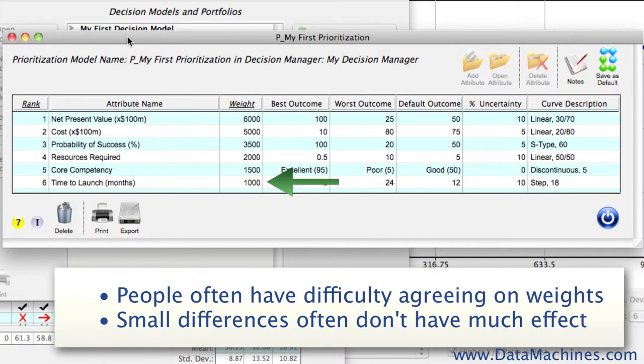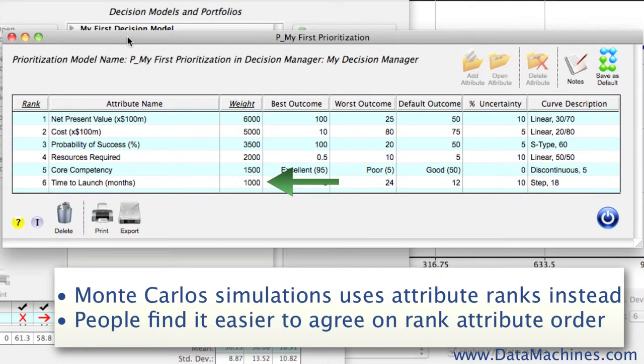Trying to determine and agree upon a set of weights can be very difficult for a group of people, and oftentimes the discussions are not even impactful in that the differences in the weights wouldn't really change the overall project rankings. This can be seen by doing sensitivity testing, where you study the changes in project rankings by varying one attribute at a time, but that is very time consuming and very complicated for large portfolios.